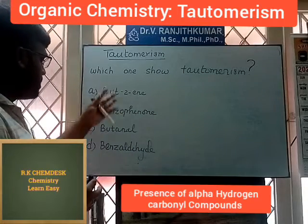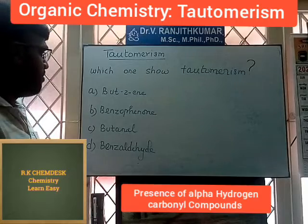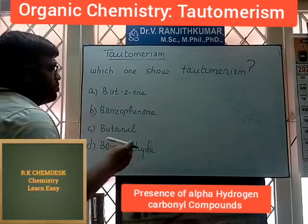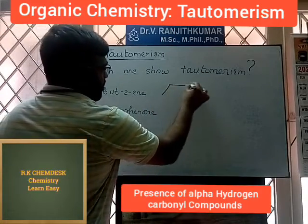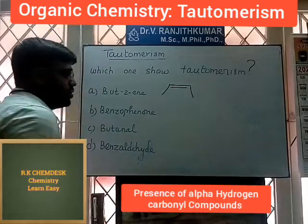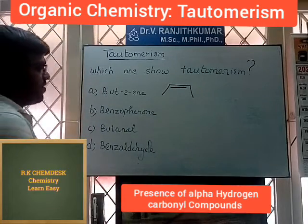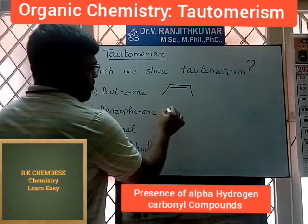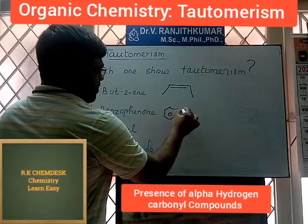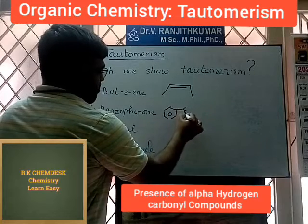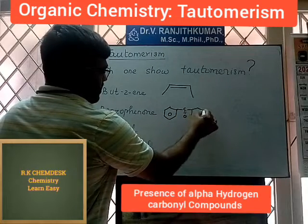Now we have the structures. Structural form: 2-butene, 2-butene with a double bond. And benzo-enol, benzene structure — C double bond. Benzene structure with C double bond.